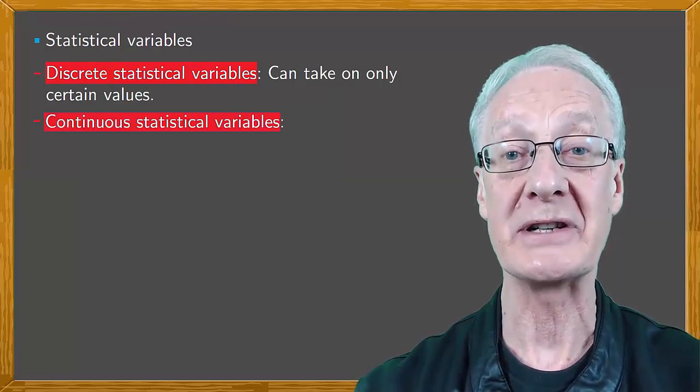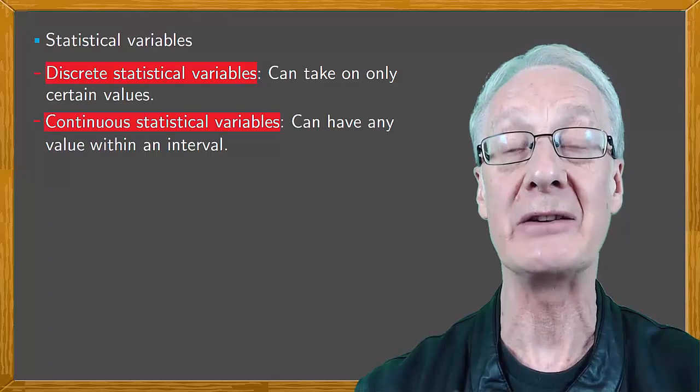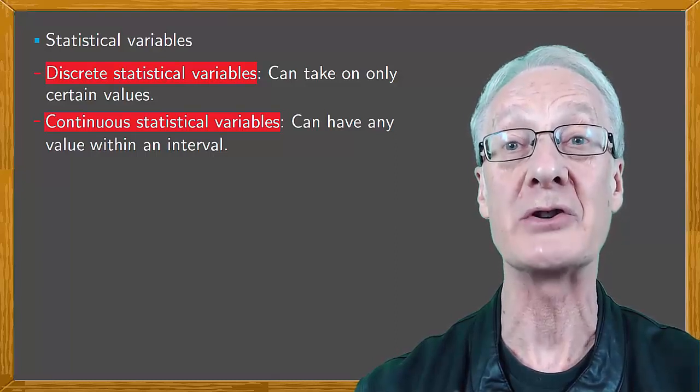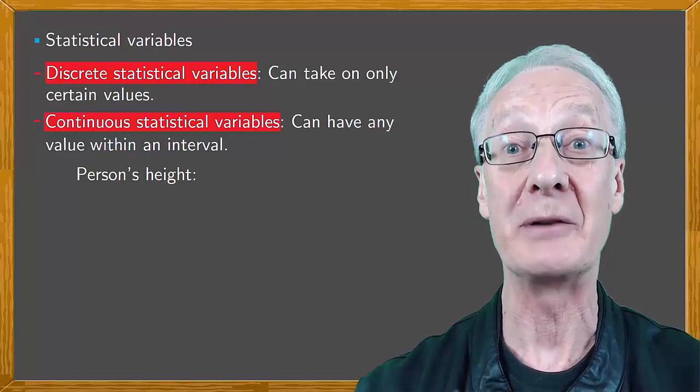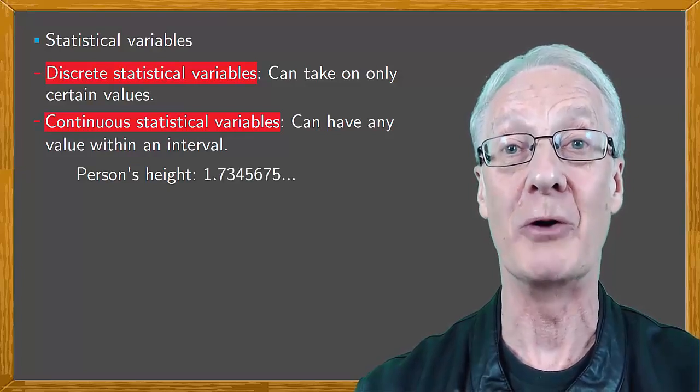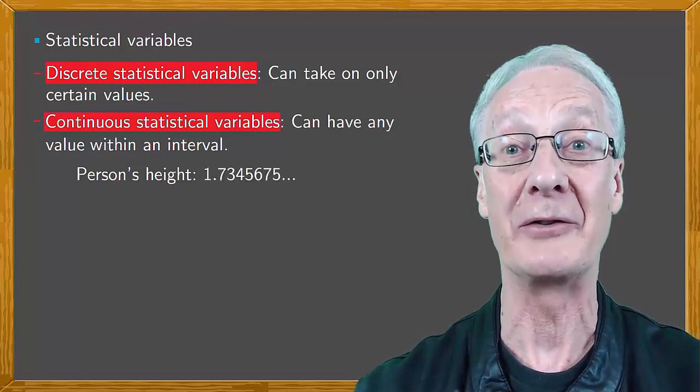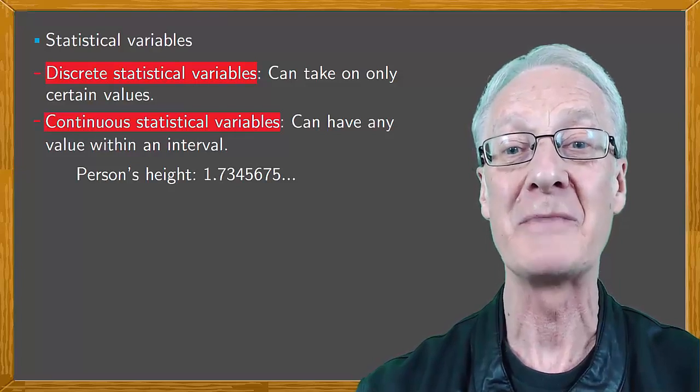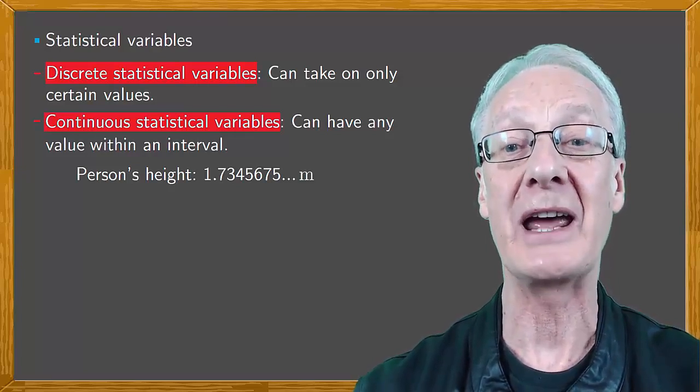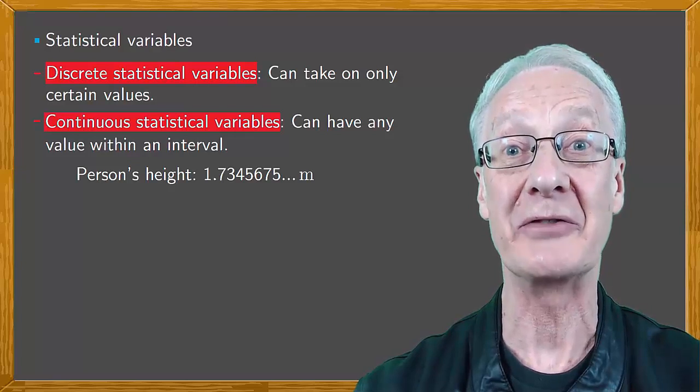Whereas continuous statistical variables can have any value within an interval, for example if we measure a person's height very precisely, say 1.73456 7 5 meters, it becomes effectively a continuous statistical variable.